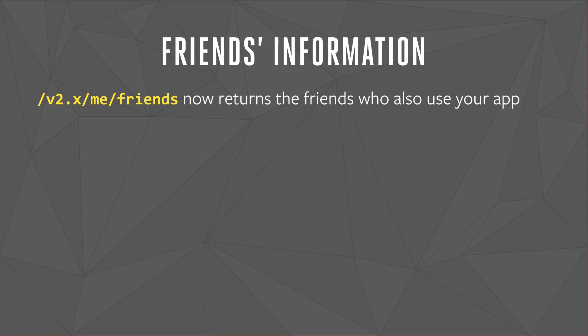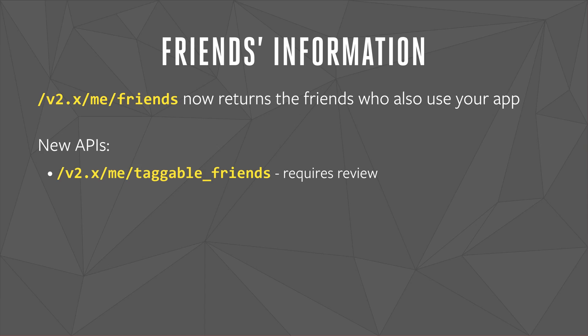The next key change is how apps access friends information. In V2.0 and above, /me/friends returns the person's friends who also use your app. There are some key cases where apps need information about a person's friends who don't use the app, and so we've built some APIs to support these cases. First, your app may want to let people tag and mention their friends in stories people publish. The Taggable Friends API returns a list of all the person's taggable friends, including those who don't use the app. It returns their name, a profile picture, and a token which can be used to tag those people in stories published by your app. This API requires review by Facebook before you can use it in production.